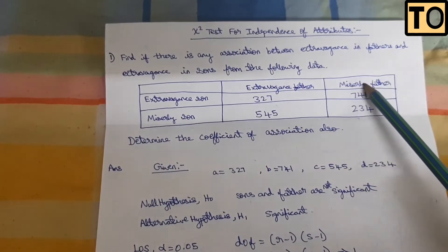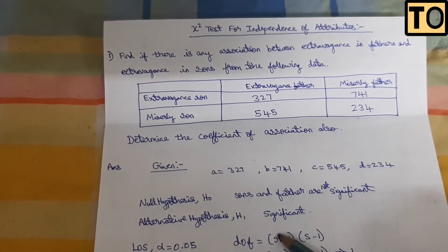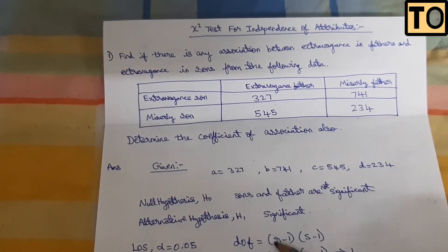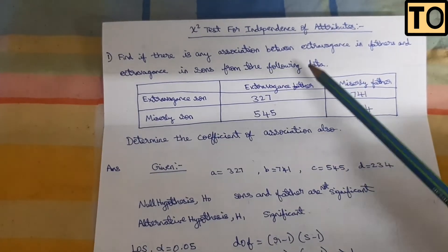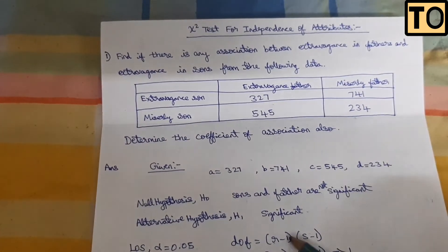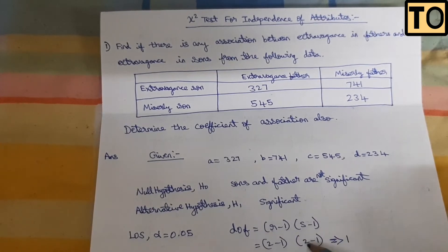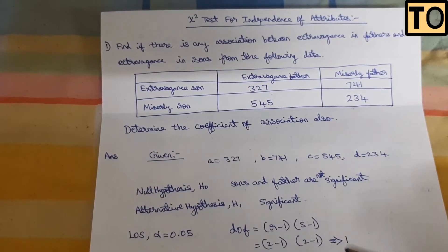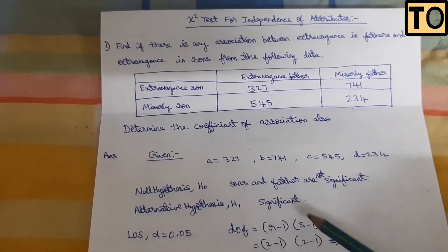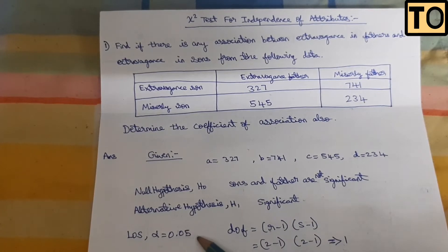We have the degrees of freedom formula: (r-1) × (s-1), where r is rows and s is columns. Substituting 2-1 and 2-1 gives 1 × 1 = 1. So the degrees of freedom is 1. We use this along with the level of significance of 0.05.